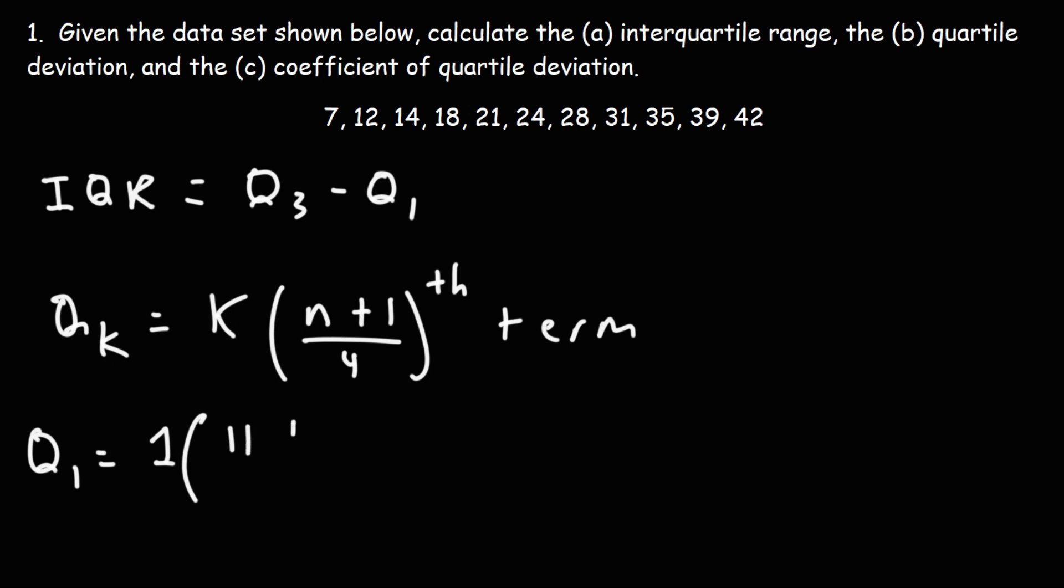So this is going to be 11 plus 1 over 4. 11 plus 1 is 12. 12 divided by 4 is 3. So Q1 is equal to the value of the third term.